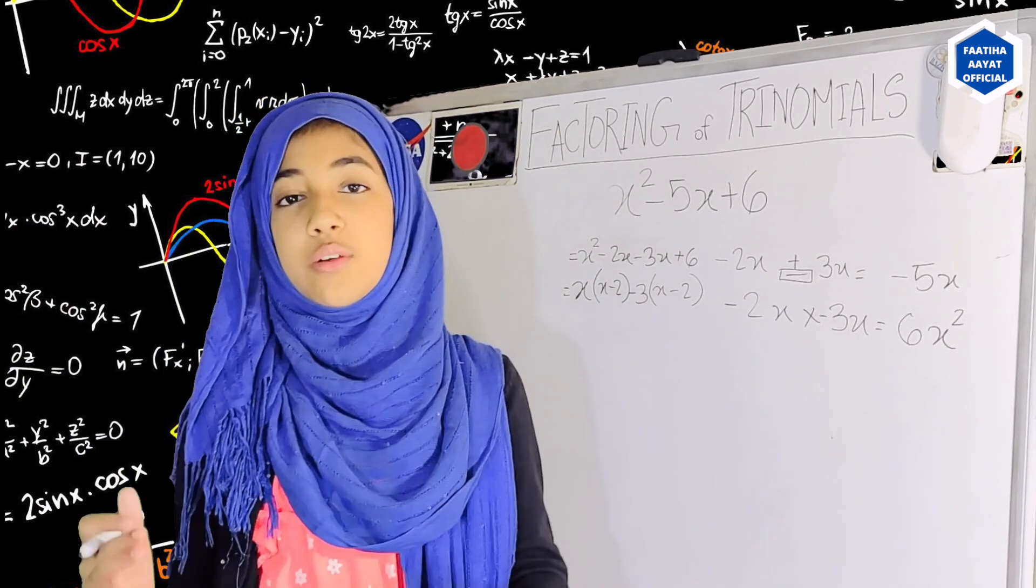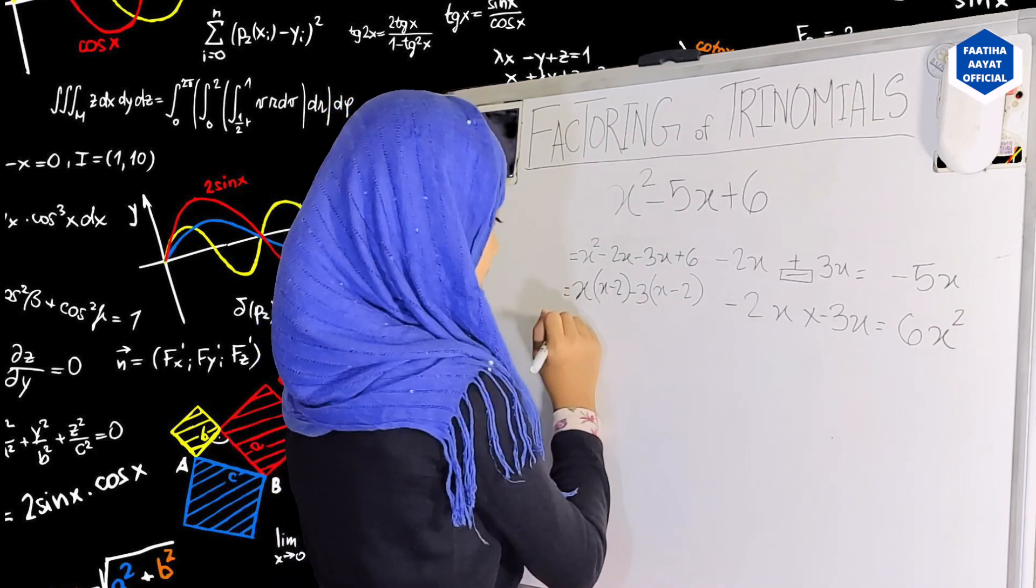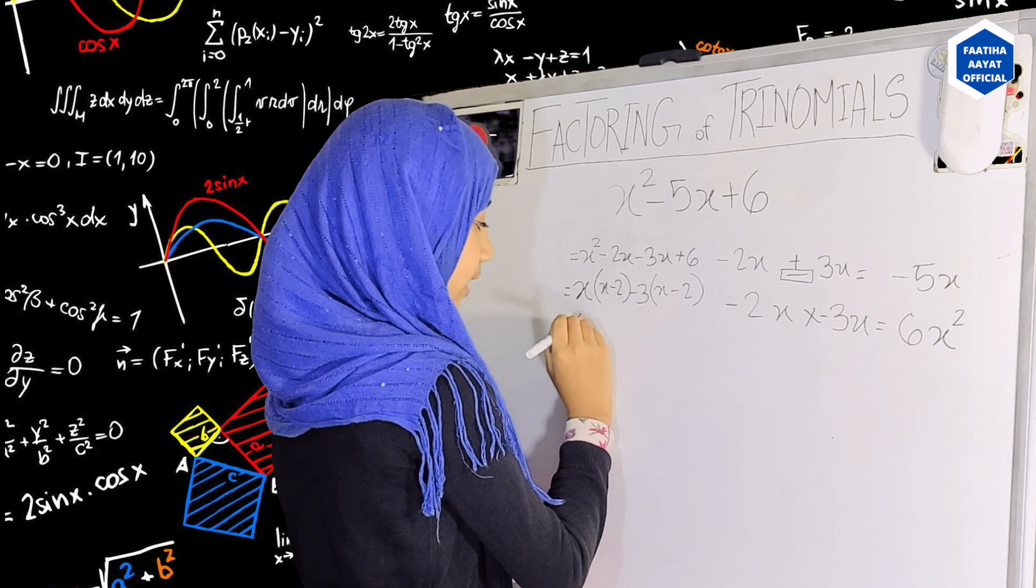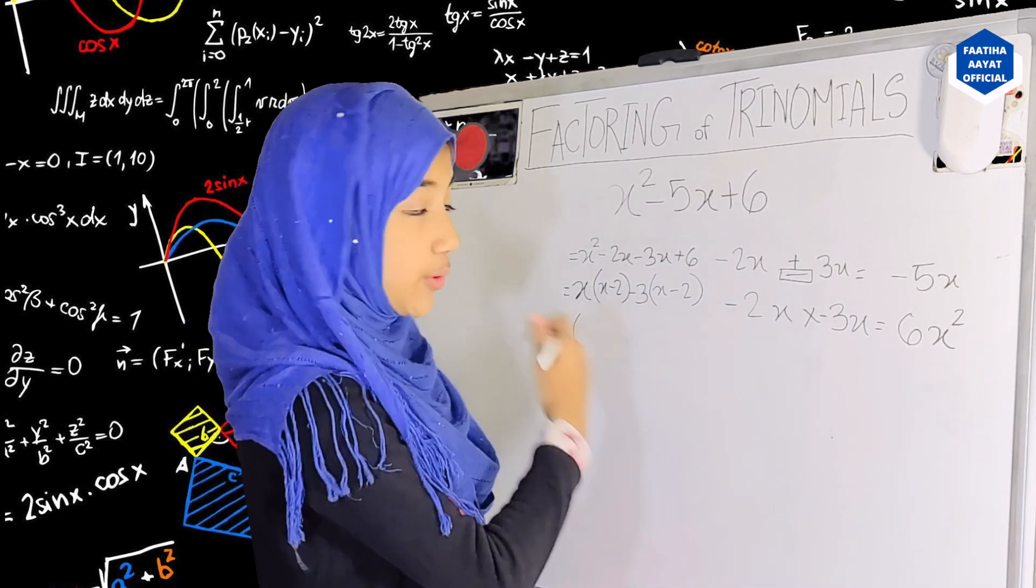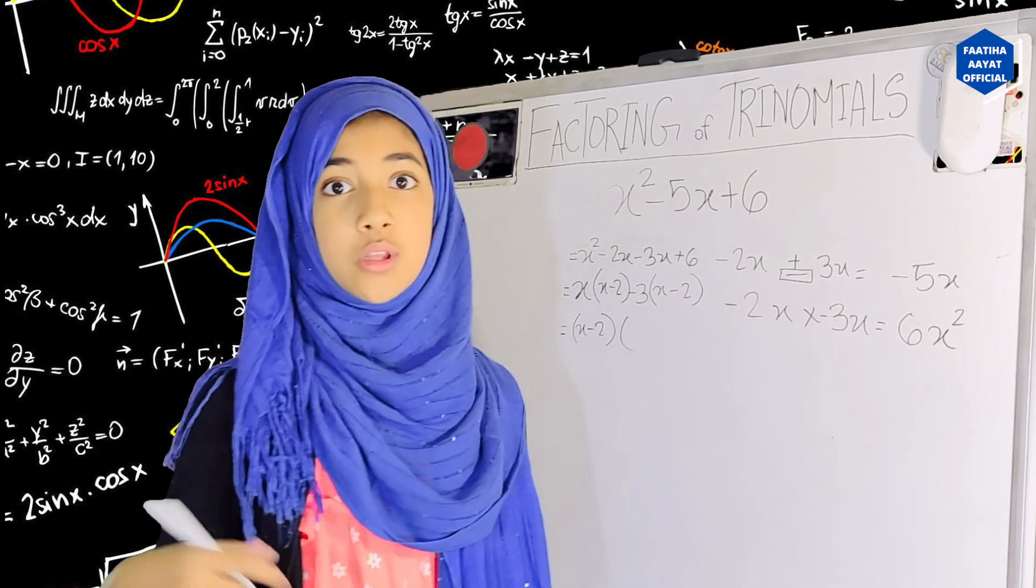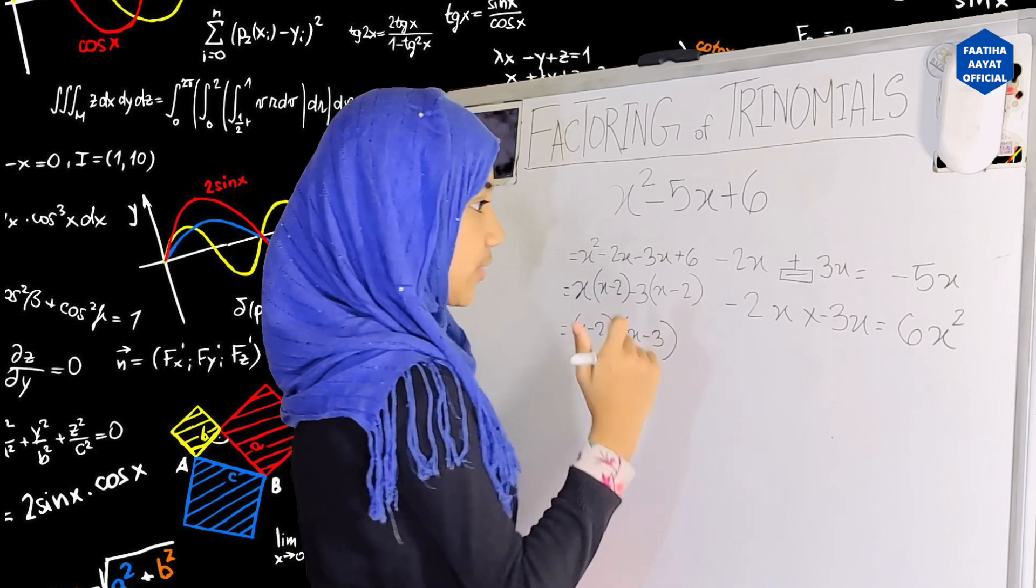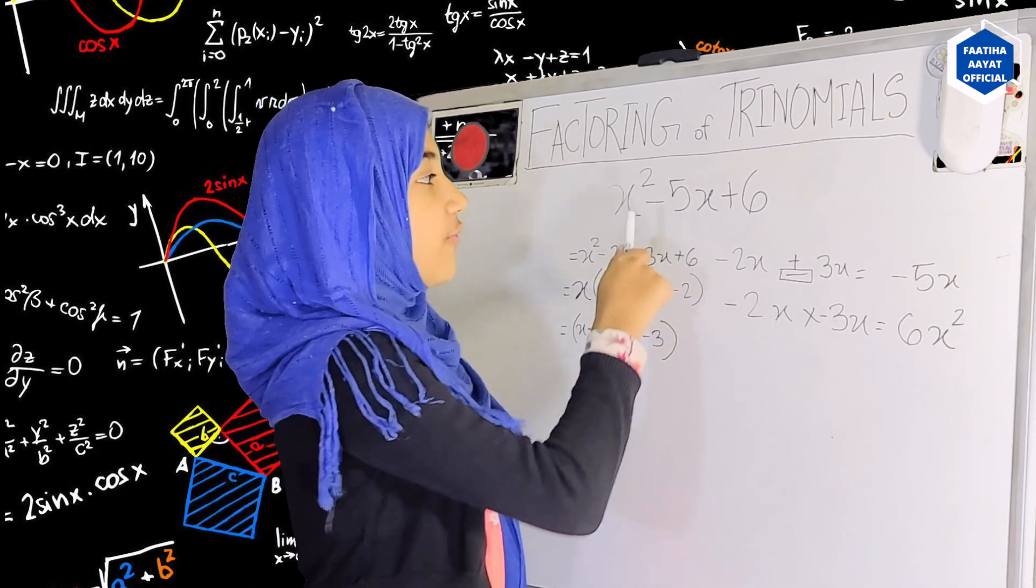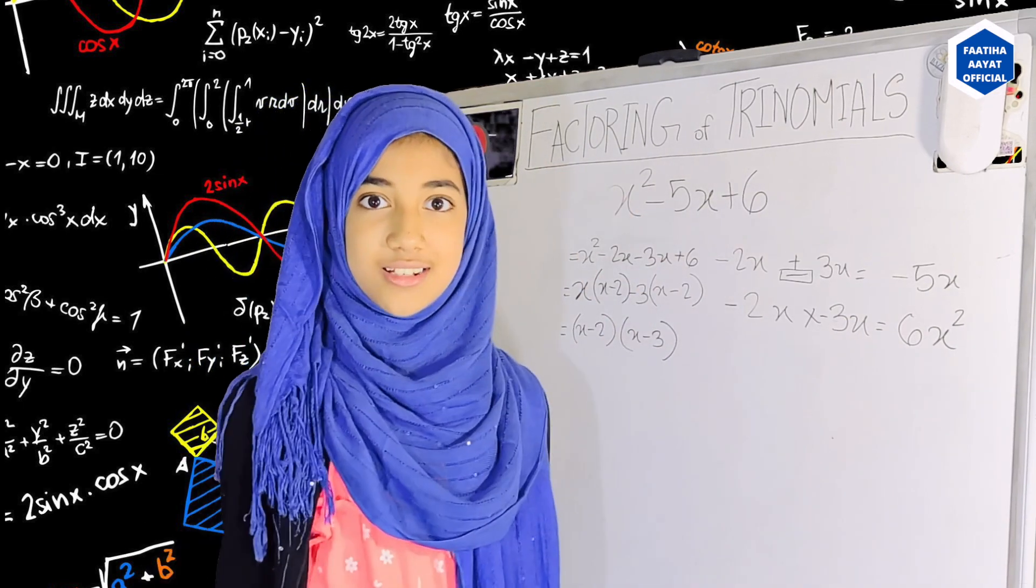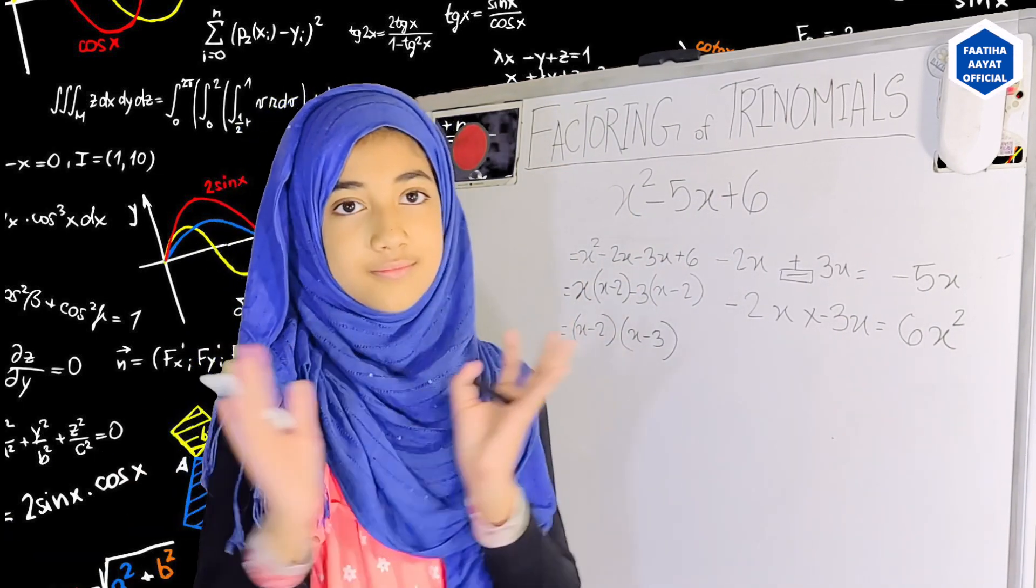Alright, next what we have to do is we have to take common x minus 2 out of both, out of this line. So if you take common x minus 2, well what will be left of it is x minus 3. And so here is my answer for this trinomial and this is how I factorized it. Thank you very much Fatia, but since you love factorizing too much.